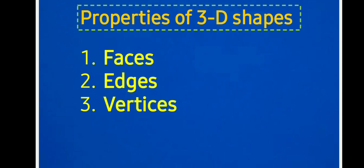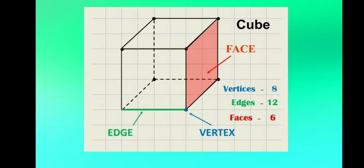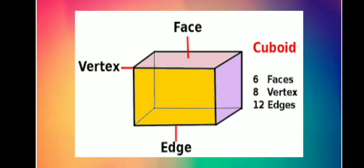Here are the properties of 3D shapes: faces, edges and vertices. The first one is a cube — a cube has 6 flat faces, 8 vertices and 12 edges. Coming to the cuboid — a cuboid also has 6 faces, 8 vertices and 12 edges.